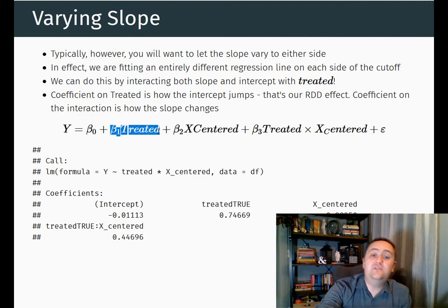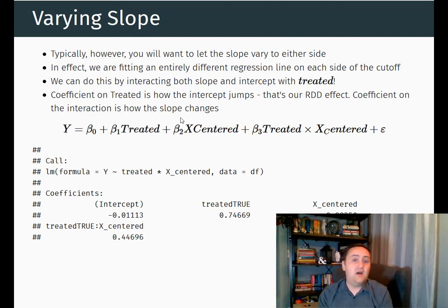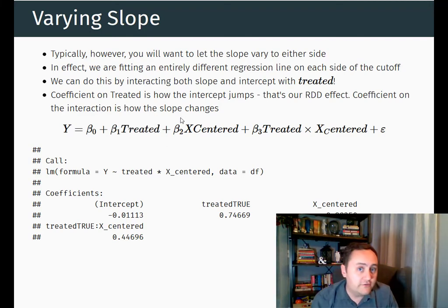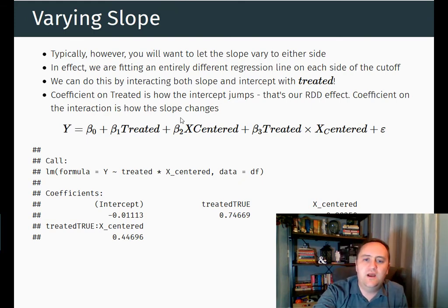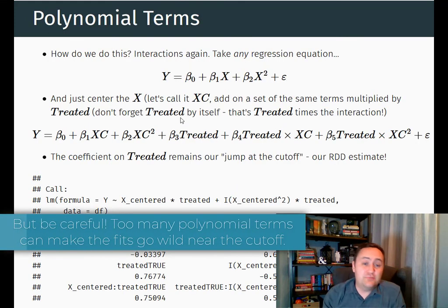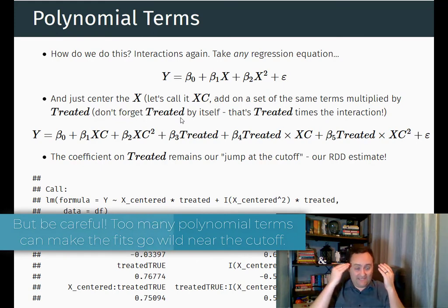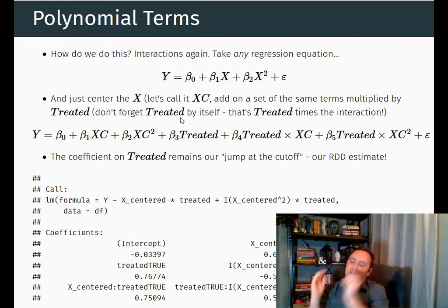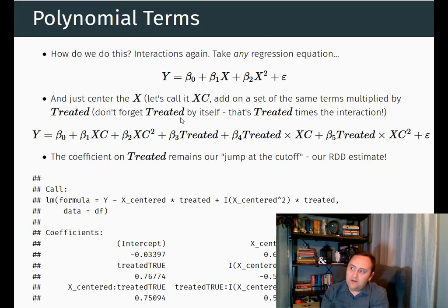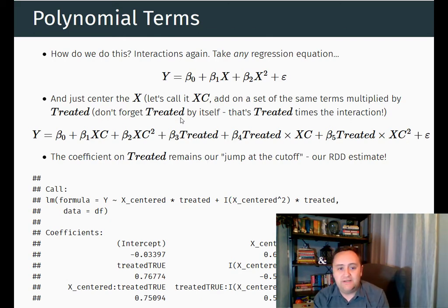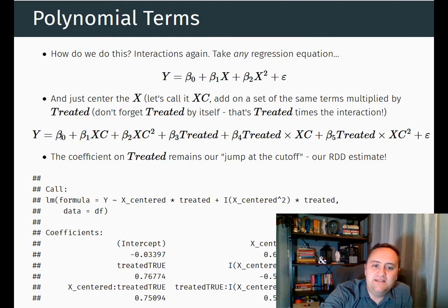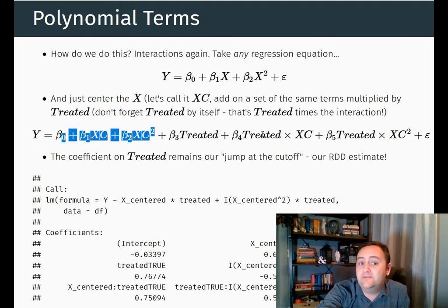Now here I've shown two straight lines on either side of the cutoff. You don't have to stop at straight lines — you can fit polynomial curves, for example, if you think there's some curviness going on. To do this, we can follow the exact same procedure of thinking about what a single line would look like. So y = beta_0 + beta_1 * x + beta_2 * x^2, center it, and then take that entire thing and multiply it by treated.